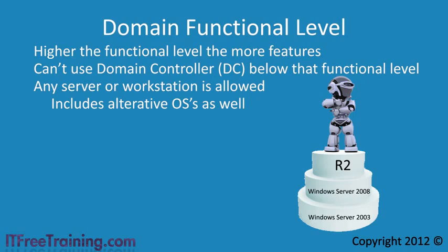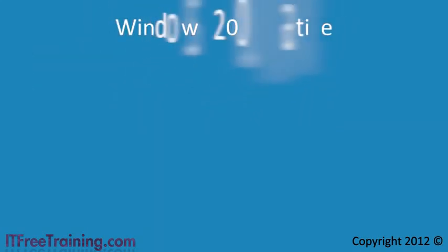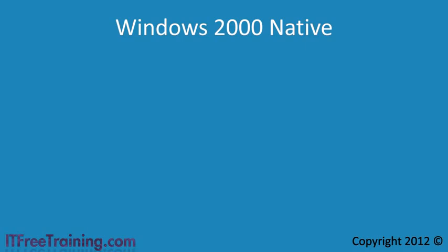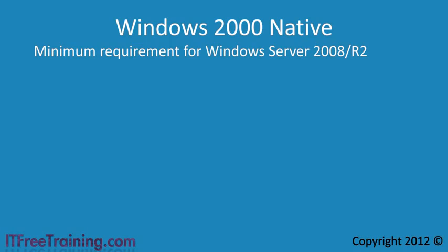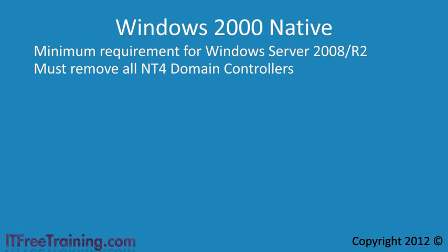The functional level only applies to the domain controllers. The first domain functional level is Windows 2000 Native, which is the lowest domain functional level that Windows Server 2008 R2 supports. In order to raise your domain functional level to Windows 2000 Native, you must remove all domain controllers running Windows NT4 from your network, which is why you cannot have Windows NT4 domain controllers.